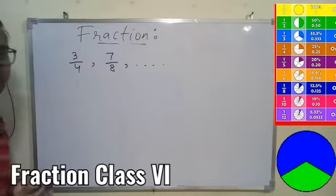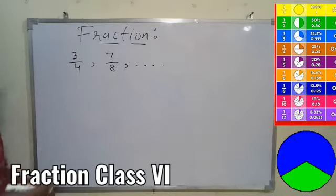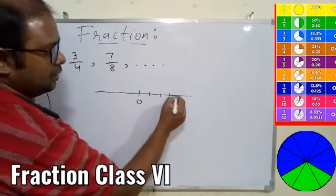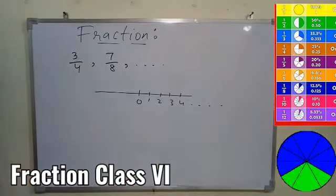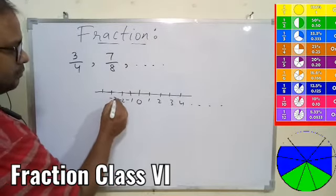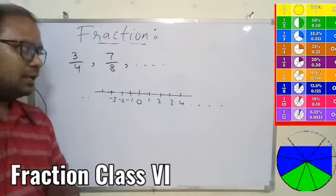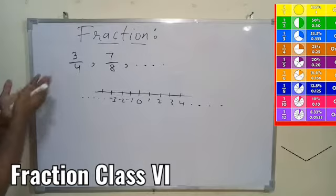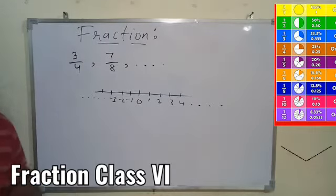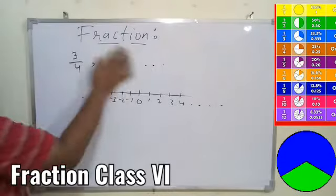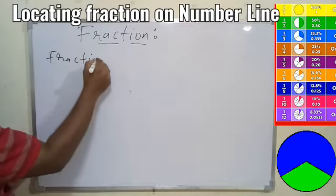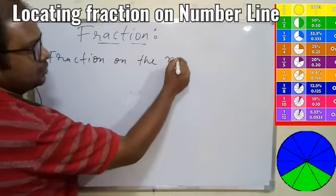Then how do we show this fraction on the number line? You know the number line: starting from reference point 0, we have 1, 2, 3, 4 and so on on one side, and minus 1, minus 2, minus 3, minus 4 on the other side. So the topic we have is: how to show a fraction on the number line.